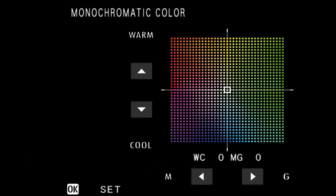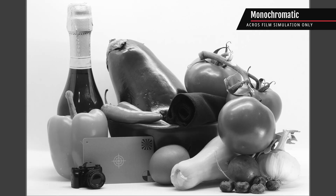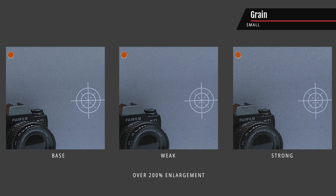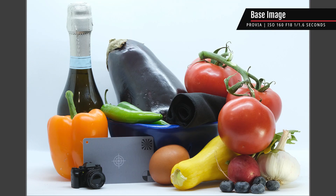Now let's look at the image quality properties we can change — keep in mind this is generally for JPEGs and won't affect raw images. Monochromatic color allows you to add color to your black and white images: the x-axis adds either magenta or green, while the y-axis adds blue or red, giving a warm, cool, or faded look. The grain effect lets you add roughness — which adds contrast — or change the size of the grain. The color chrome effect increases the range of tones for highly saturated colors: reds, yellows, and greens.